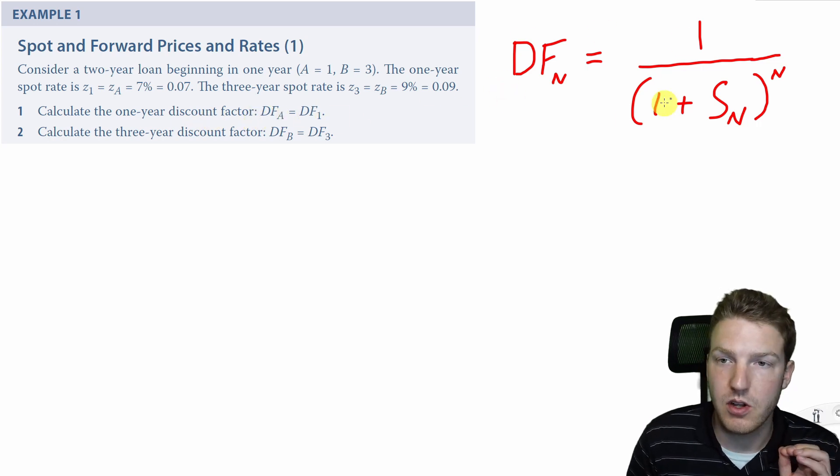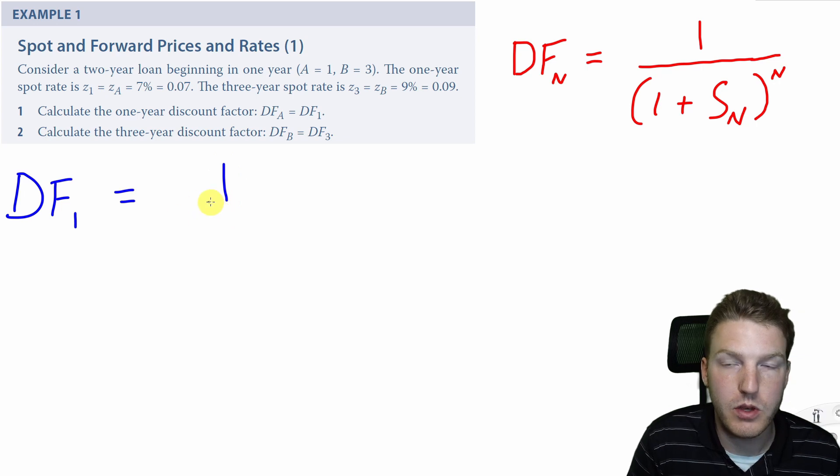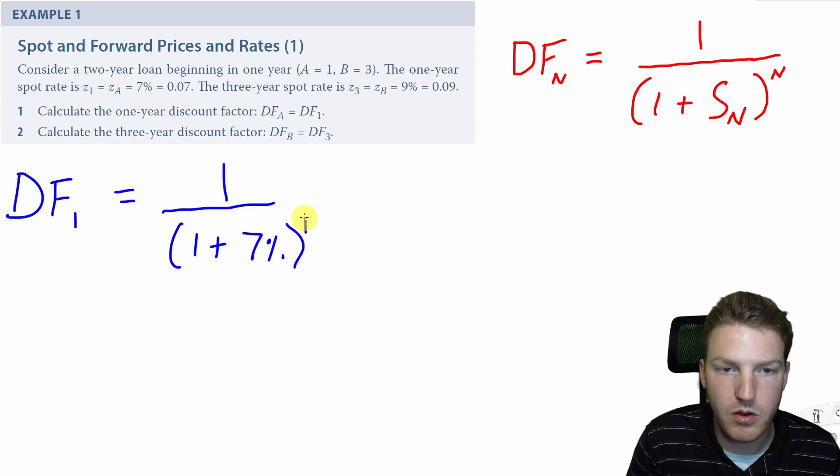So all we need for this is our handy formula we have up here. So we're going to say DF1 is equal to the $1 that will be exchanged one year from today over 1 plus the 1-year spot rate of 7% to the power of 1. So this gives us 93.46 cents.